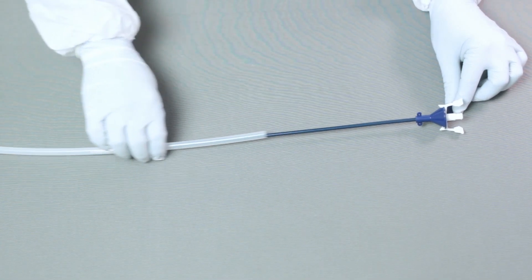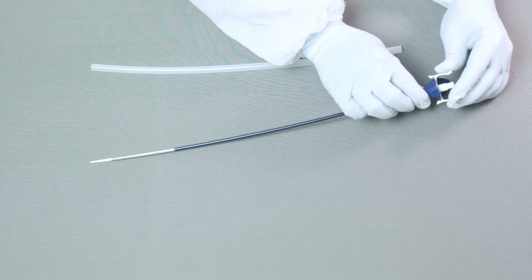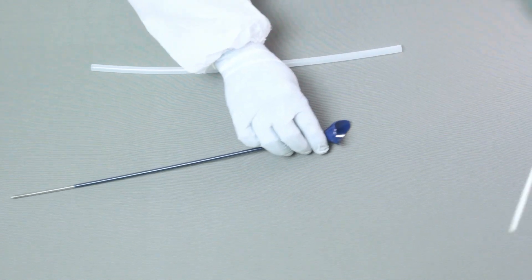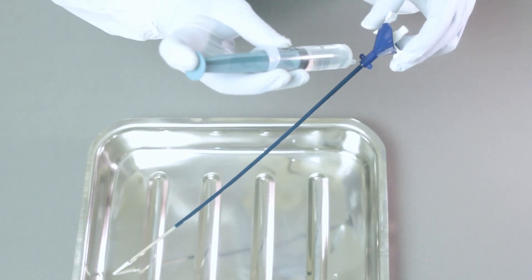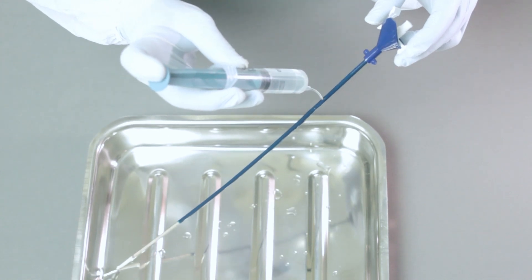The package contains ureteral access sheath and dilator assembly. Activate the hydrophilic coating of the device with heparin or saline solution prior to insertion.